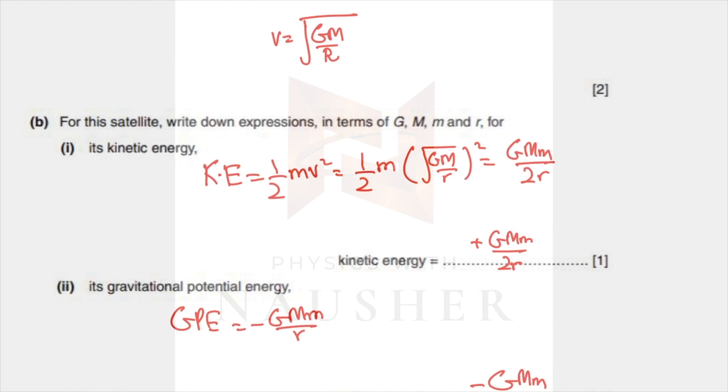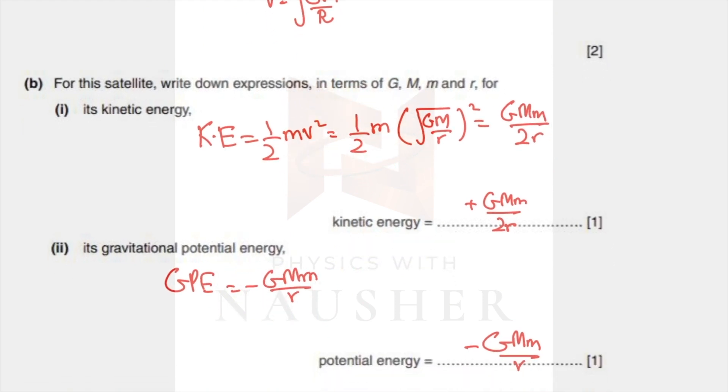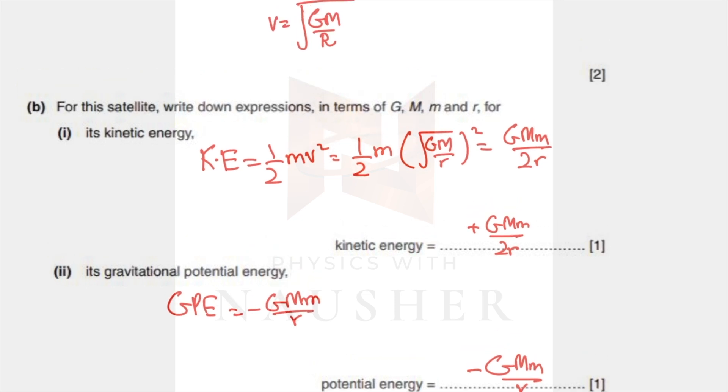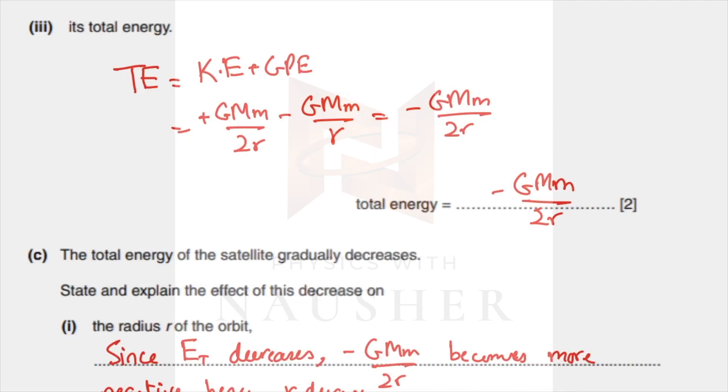Next they ask you to find the total kinetic energy and total potential energy. Kinetic energy is half mv squared. You already proved your speed as square root of GM over r, so plug that in and you get GMm over 2r. Gravitational potential energy is minus GMm over r.